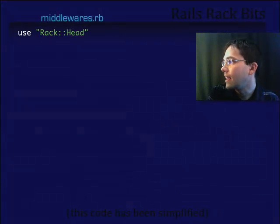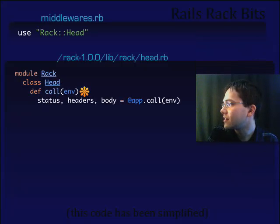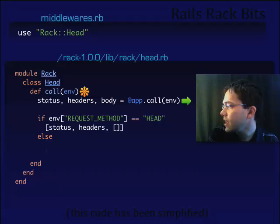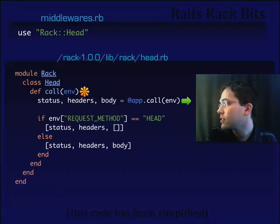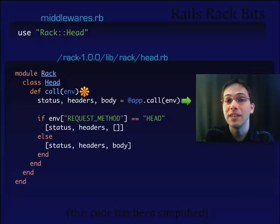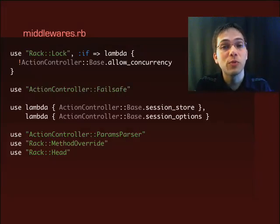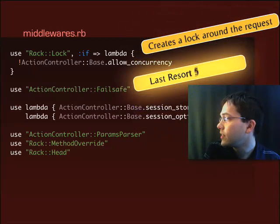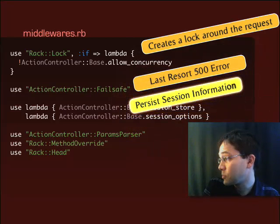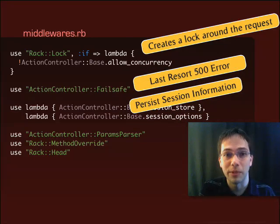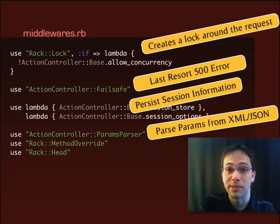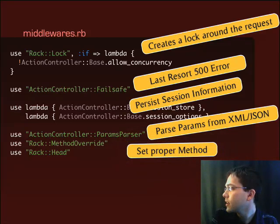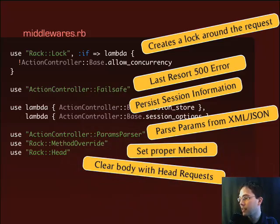Next up, we've got Rack Head. Opening up head.rb, there's the call definition. It looks like we're doing something to the response: if the request method is HEAD, we just clear out the body. Because if you're familiar with the HTTP spec, you know that HEAD requests can never return a body, so here we're just stripping it out. So that's our Rails Rack stack. To review: Rack Lock creates a lock around the request if we're not allowing concurrency; Failsafe is the last resort 500 error; the session middleware persists session info; Params Parser parses params from XML and JSON; Method Override sets the proper method; and Rack Head clears the body on HEAD requests.